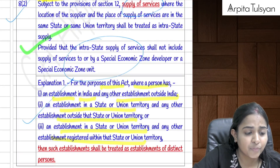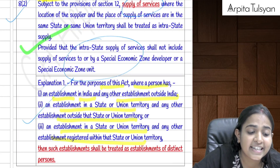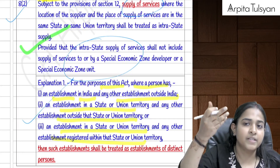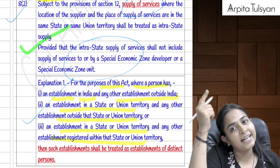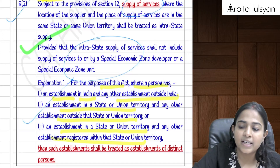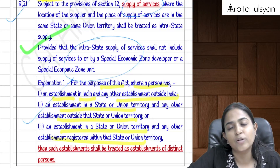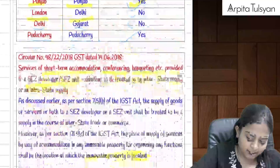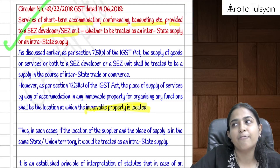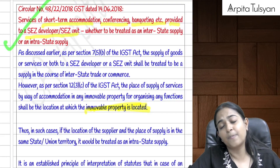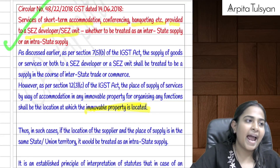If services are provided between establishments of distinct persons — whether in the same state, different states, or even outside India — this is always treated as supply and is not considered export. A circular clarifies that if lodging/accommodation or conference services are provided to an SEZ, those are always interstate, and the service provider must apply IGST.